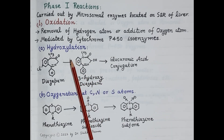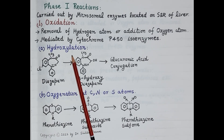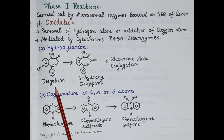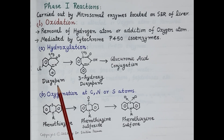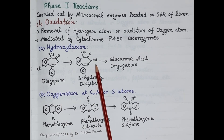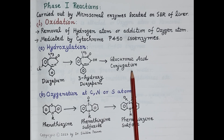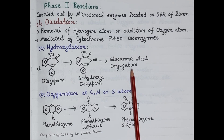Let's first talk about hydroxylation, which is a type of oxidation reaction. The hydroxylation reaction is explained here with an example of diazepam. One of the pathways by which diazepam is metabolized is by hydroxylation. One oxygen atom is added and the structure is modified — diazepam is oxidized to 3-hydroxydiazepam. This 3-hydroxydiazepam is slightly polar and it further undergoes phase 2 reactions, specifically glucuronic acid conjugation, and thereby is easily excreted from the body.